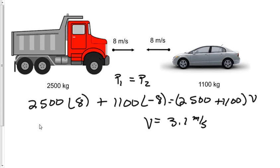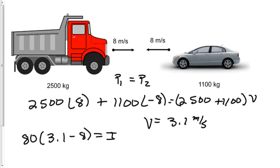Now let's look at the impulse for an 80 kg person in the truck. Impulse equals mass times the change in velocity. The final velocity for that person is 3.1 meters per second minus the beginning velocity of 8 meters per second. That gives an impulse of 391 kg·m/s.